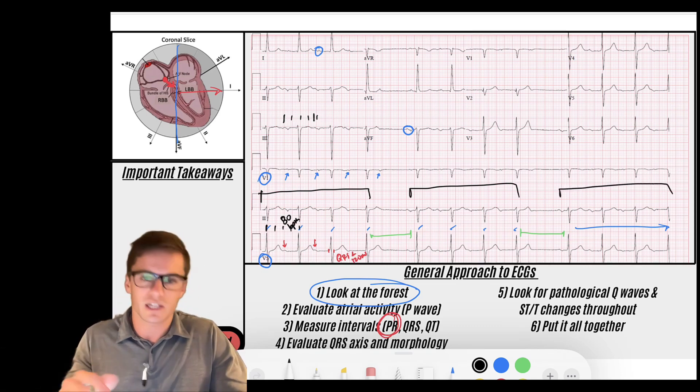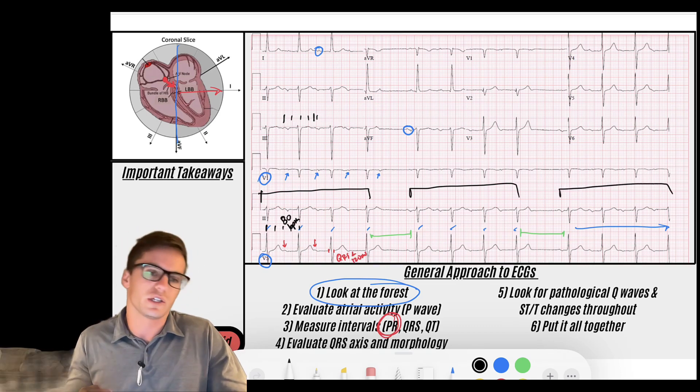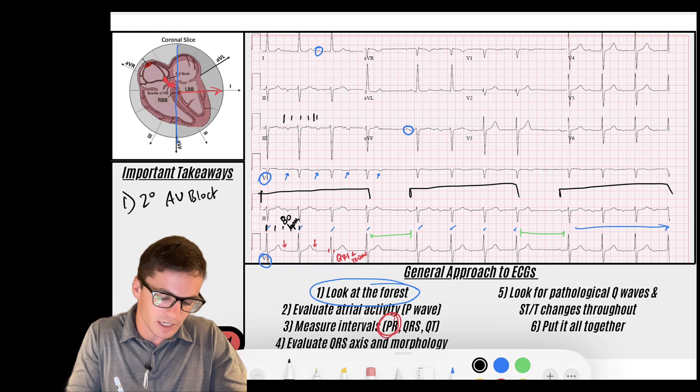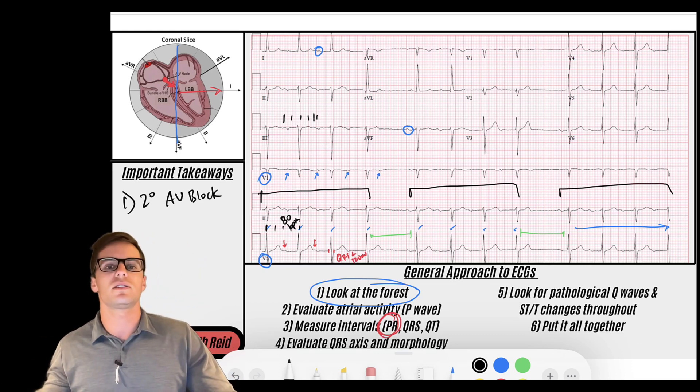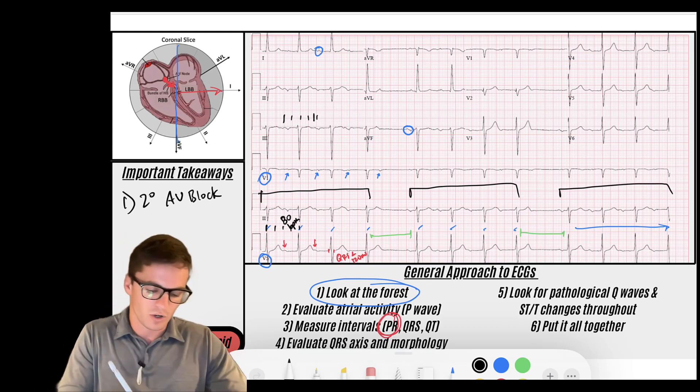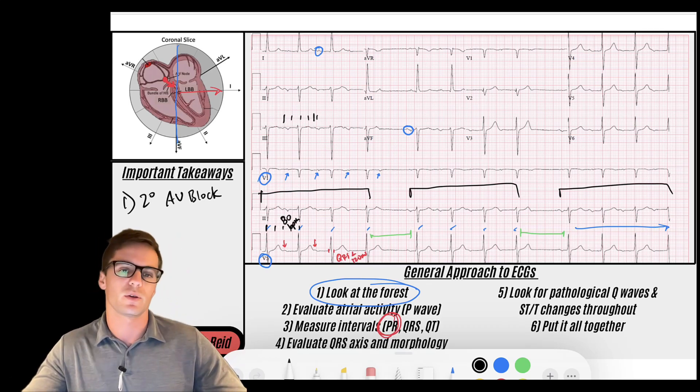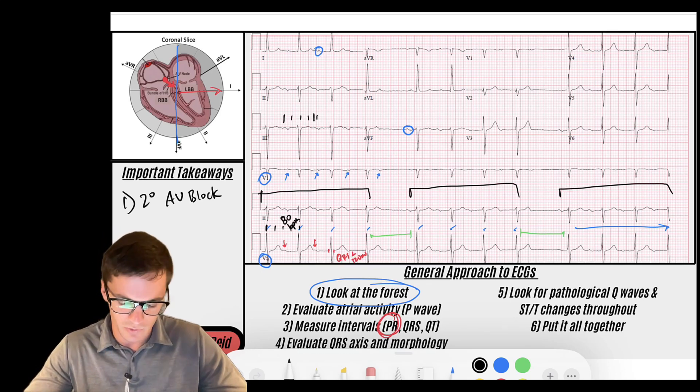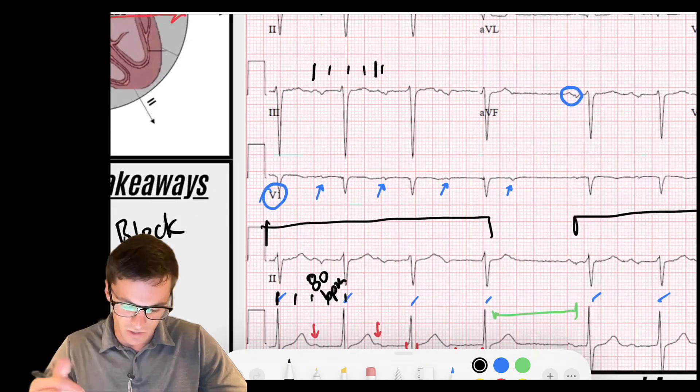Remember we said that group beating can be one of really two things. It could be a second degree AV block. Remember second degree means that some P waves make it to the QRS and maybe a handful don't. Not all of them do, not all of them don't. Or it could be like a bigeminy where you have every other beat is something. We don't have bigeminy here.